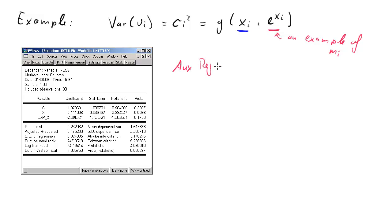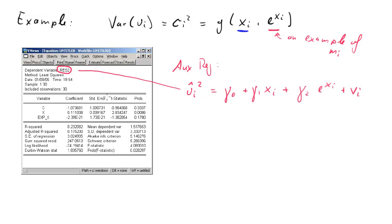Here's our auxiliary regression. We estimate the regression model, save the residuals as Ui hat, calculate the squared residuals, and then use these as the dependent variable in a new regression model. As explanatory variables, we have a constant — you always have to use a constant in this context — xi, and e to the xi. The test statistic is going to be n times R squared. We can see in this regression output that n is 30, and the R squared appears here in the regression output.